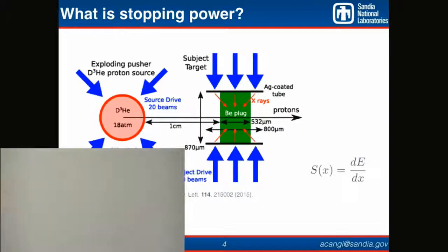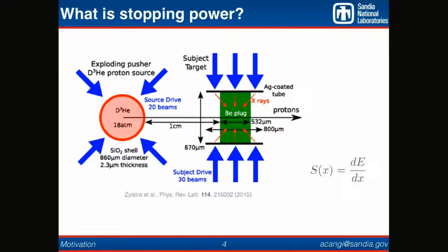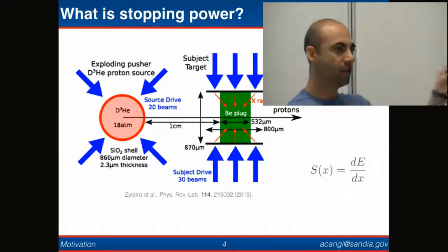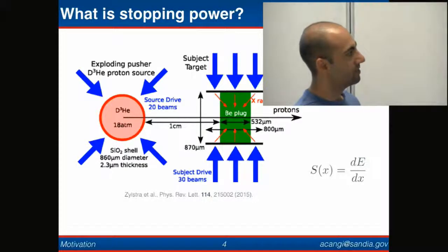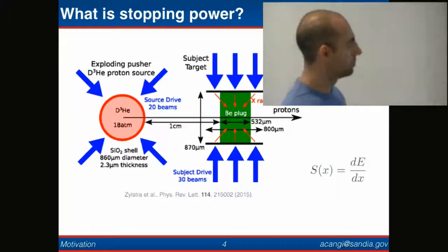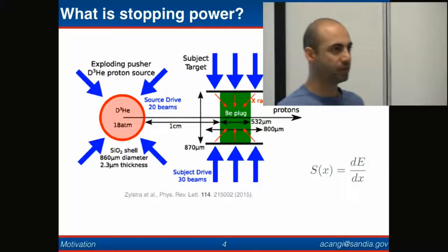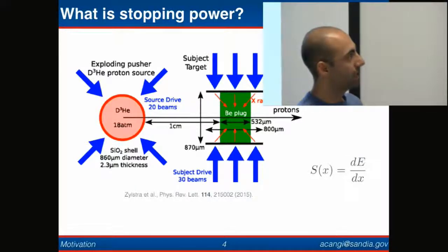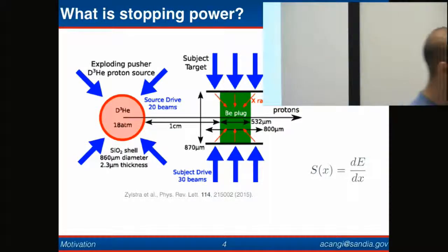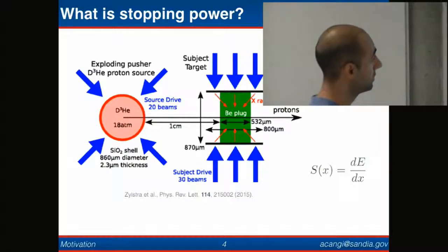The calculations and experiments I focus on today are done at the Omega Facility at Rochester University, but it uses the same technique. Now let's get closer to the topic. What is stopping power? It's a very old concept from the beginning of the 20th century. The question we answer here is: when we shoot a projectile into a target, into a material, stopping power is the amount of energy deposited in that material or the loss of energy of that projectile when it travels through the target. The energy per unit path length is stopping power.